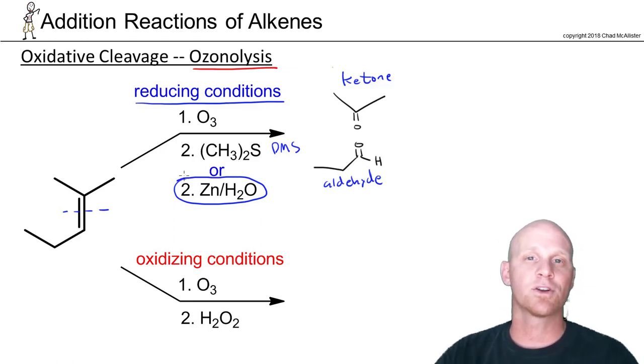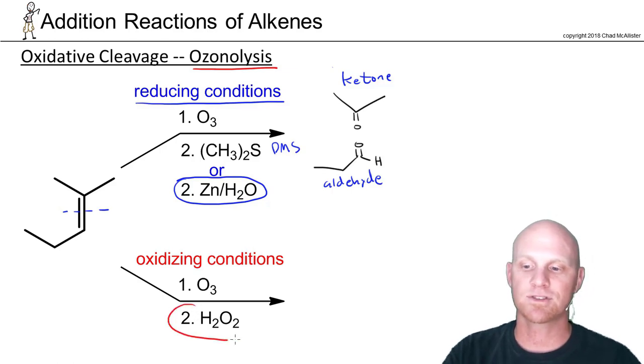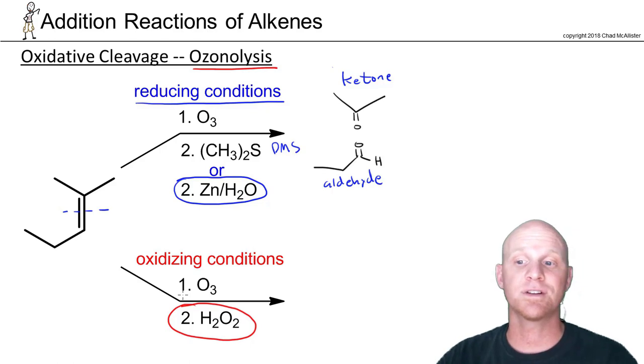So this would be ozonolysis under reducing conditions. And it's that second step that ultimately determines whether it's oxidizing or reducing conditions. But we can also do it under oxidizing conditions. And the only difference here will be step two. Instead of using a reducing agent, we're going to use an oxidizing agent here, hydrogen peroxide.